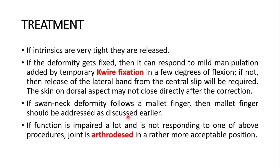If intrinsics are very tight, they are released. If the deformity gets fixed, it can respond to mild manipulation aided by temporary K-wire fixation in a few degrees of flexion. If not, then release of the lateral band from the central slip will be required. The skin on the dorsal aspect may not close directly after correction. If the swan neck deformity follows a mallet finger, the mallet finger should be addressed as discussed earlier. If function is severely impaired and not responding to the above procedures, the joint is arthrodesed in a more acceptable position — arthrodesis, where the bones are joined to make a longer bone.